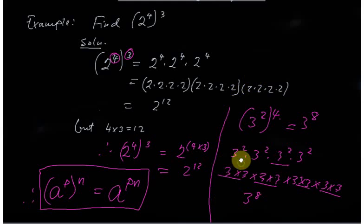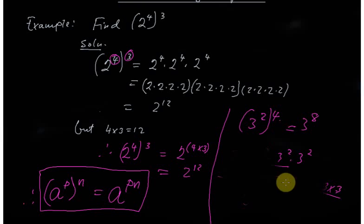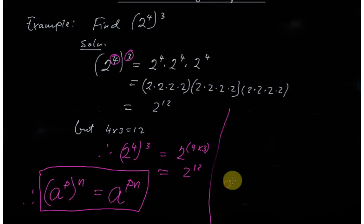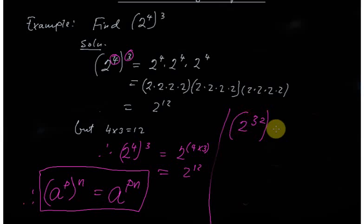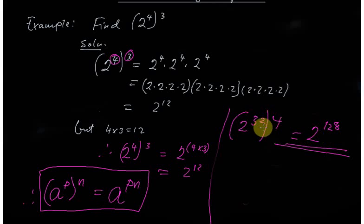It is very important when you have a big number of exponents. Suppose you have two to the power 32, then to the power four. Expanding that manually would be very tedious, but using the rule, you simply multiply 32 by 4 to get 128. So the answer is two to the power 128. This theory makes life easy.